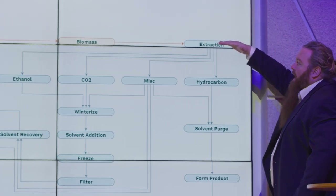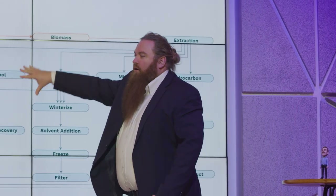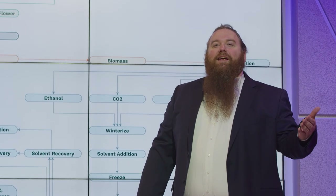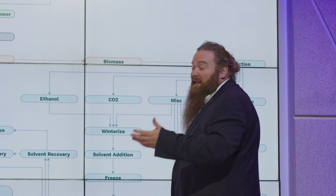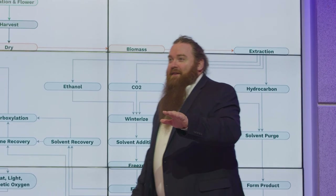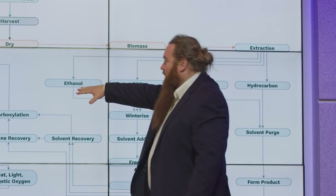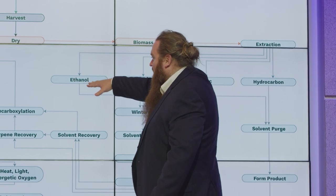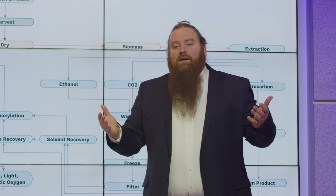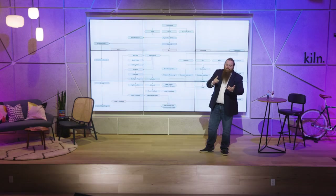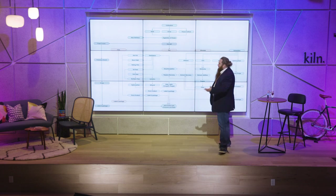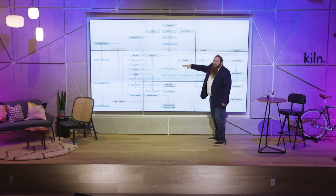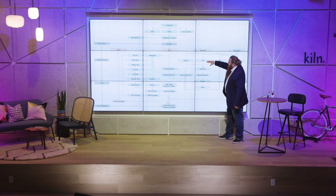From biomass you're going to take it to extraction. Extraction has multiple approaches. The most common is ethanol. Many people don't want to spend the money on pure ethanol and use denatured ethanol — that's a problem. You want to make sure it's food-grade ethanol. With a good solvent recovery system you'll get your ethanol back, so it doesn't cost as much. Ethanol is effective for almost all kinds of plant extraction — lavender, vanilla, nearly any plant.